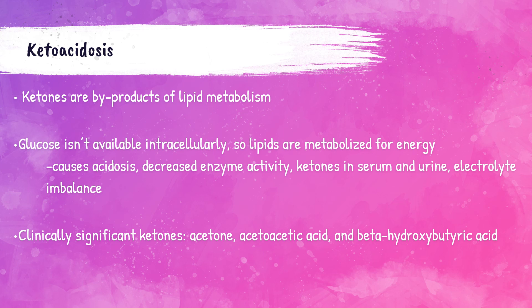Ketones are produced from the breakdown of lipids or fat, and this happens when glucose cannot be broken down as a source of energy. In type 1 diabetes mellitus and in carbohydrate deprivation like the keto diet, ketones can be present in the bloodstream and urine. There are three clinically significant ketones: acetone, acetoacetic acid, and beta-hydroxybutyric acid (BHB). Ketones can be detected via the acetest, which uses a nitroprusside reagent in tablet form. Modern chemistry analyzers can run BHB via an assayed method.